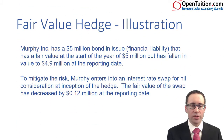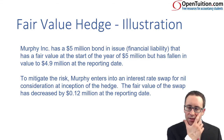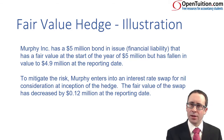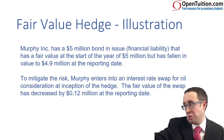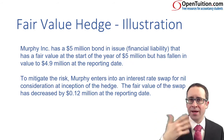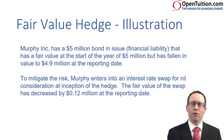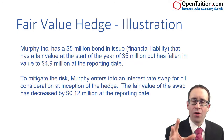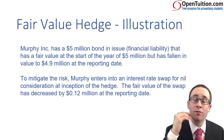Let's have a quick look at this illustration to pull it all together. Murphy Inc. has a 5 million bond issue. If you have issued a bond, you have raised finance — you have a financial liability. And that had initially a fair value of 5 million dollars. But it's fallen in value to 4.9 million dollars at the reporting date. A fall in the value of a liability is a good thing, so it's a gain — a gain of 0.1 million on the item.